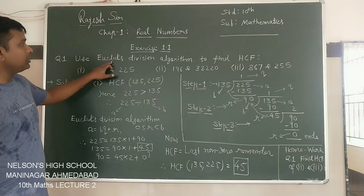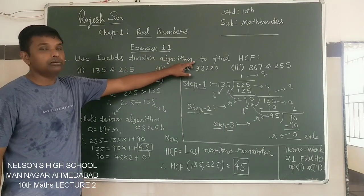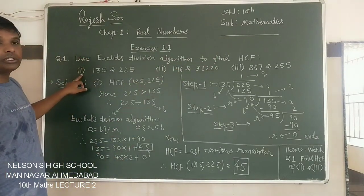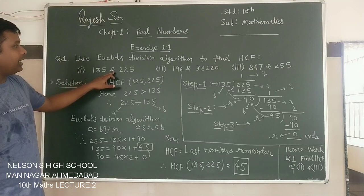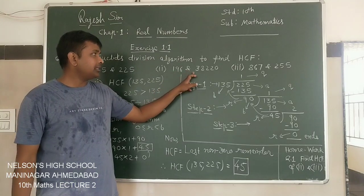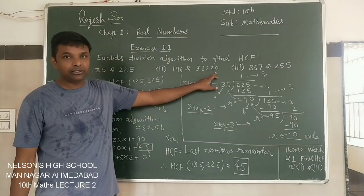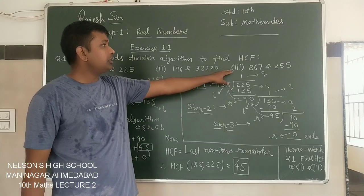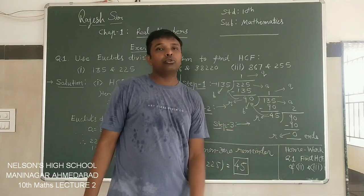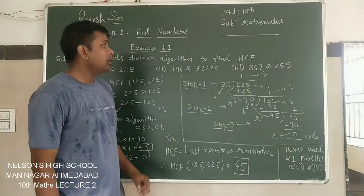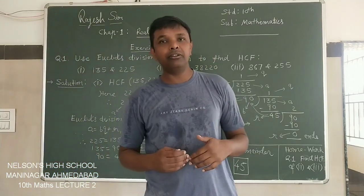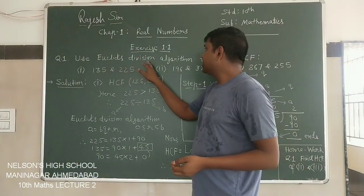This Euclid's Division Lemma is also called Euclid's Algorithm, and it can be used to find HCF. Related to this, the question we have in Exercise 1.1, question number 1: Use Euclid's Division Lemma to find HCF of 135 and 225, second is 196 and 38220, and third is 867 and 255. We will understand in this lecture how we can find HCF using Euclid's Division Lemma.